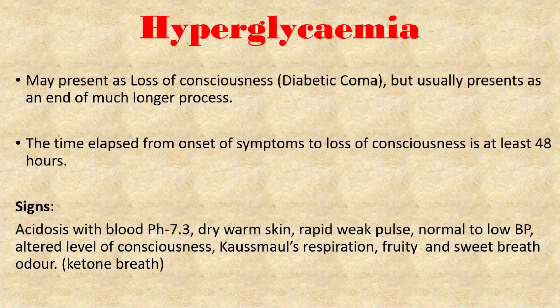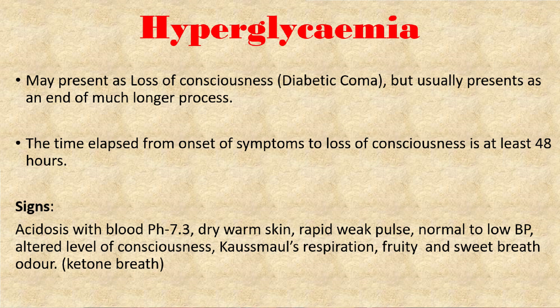Hyperglycemia usually presents as loss of consciousness, but it presents as the end of a much longer process. The time elapsed from onset of symptoms to loss of consciousness is at least 48 hours. The patient can present with dry warm skin, rapid weak pulse, ketone breath, and Kussmaul respiration — a deep labored breathing similar to hyperventilation — which we see in cases of hyperglycemia.